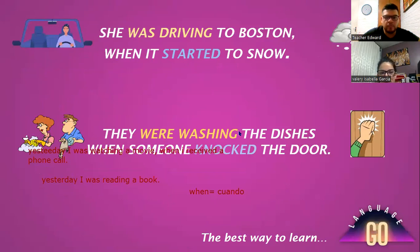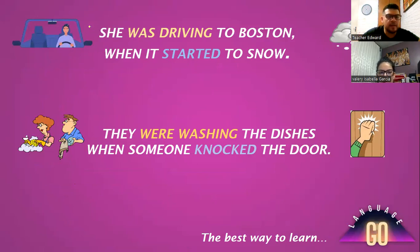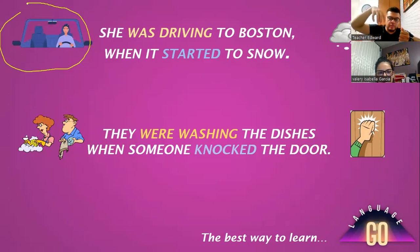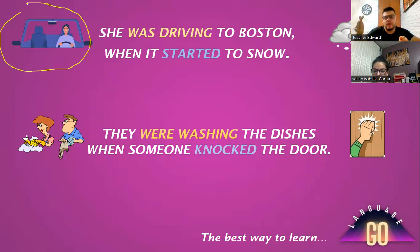'She was driving to Boston when it started to snow.' Imagine this person — she was driving to Boston, very happy, driving to Boston when it started to snow. And probably for that reason, she couldn't keep on driving or she had to stop. That was the action that was happening: she was driving and later it started to snow.